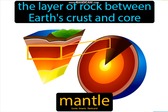So firstly, what is the meaning of mantle? Mantle is the layer of rocks between earth's crust and the core. There are three layers — crust, mantle, and core — and the mantle is the second, or central, layer of earth's interior.